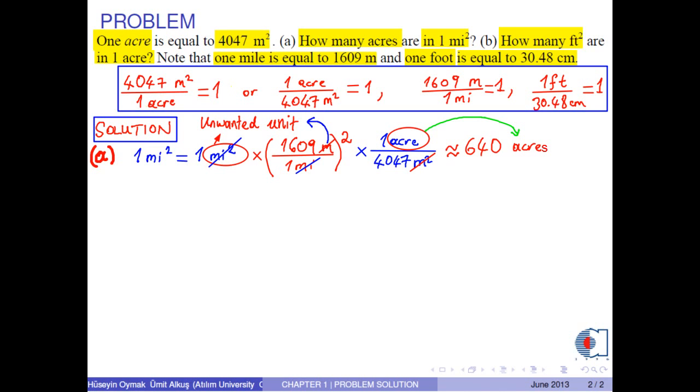In part b, we write one acre is equal to one acre. Since acre is an unwanted unit, we convert it into meter squared by the following conversion factor. The units of acre are cancelled, but the remaining unit of meter squared is also an unwanted unit.